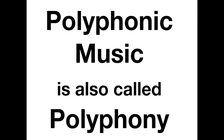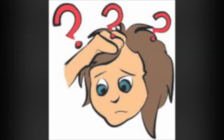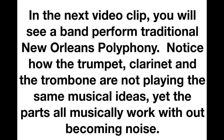He was the first one who really successfully wrote down the New Orleans polyphony — meaning the three horns: the trumpet, the clarinet, and the trombone, when they're playing three different things. Polyphonic music is also called polyphony — they are one and the same. To understand what this word means, let's break down the syllables: "poly" meaning more than one, "phonic" meaning sound. Therefore, polyphony is music containing two or more lines of music that are independent from one another. In the next video clip, you will see a band perform traditional New Orleans polyphony. Notice how the trumpet, clarinet, and trombone are not playing the same musical ideas, yet the parts all musically work without becoming noise.